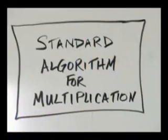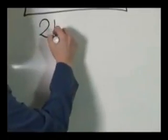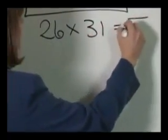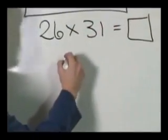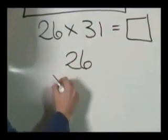An algorithm is a systematic method of solving a certain kind of problem. Now here is the standard algorithm for double digit multiplication. Let's do the problem 26 times 31 equals I don't know. So let's write it like this. The standard algorithm goes like this.